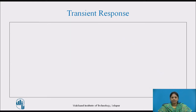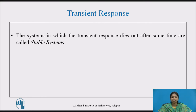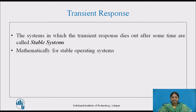To get the desired output, the system must pass satisfactorily through the transient period. The transient response must vanish after some time to get the final value, which is closer to the desired value. Systems in which the transient response dies after some time are called stable systems. Mathematically, for a stable operating system, the equation is given as C_T(t) = 0.